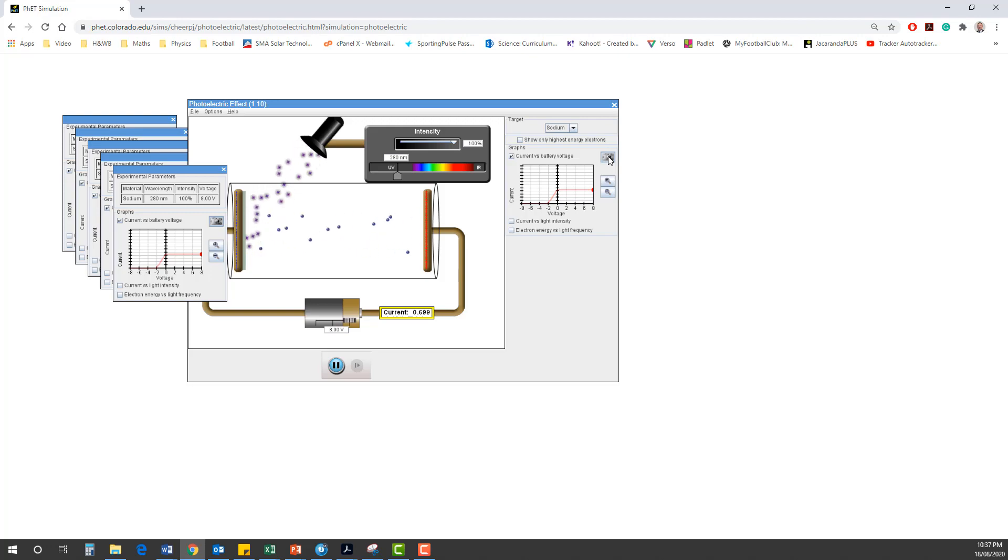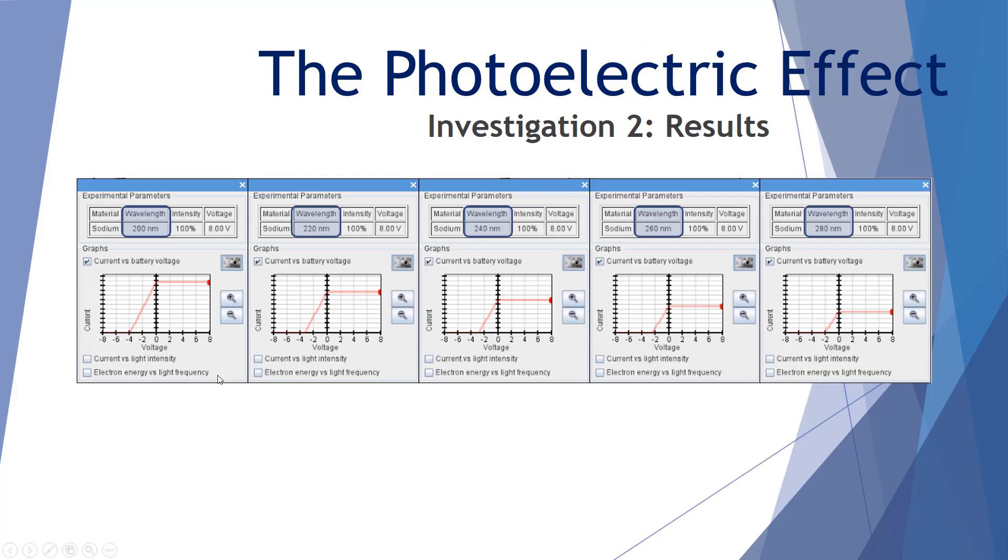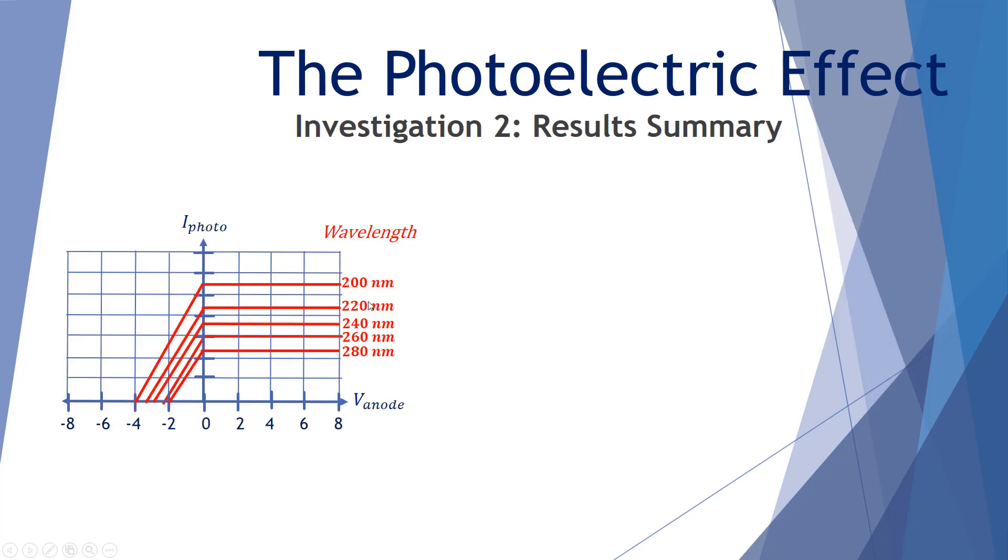Let's now analyze these results. Here's our summary of results. So we can see as we're changing our wavelength from 200 nanometers to 220 to 240 to 260 to 280, there's definite changes happening in each of these five graphs. This is a summary of our results, starting at 200 nanometers and moving down to 280 nanometers. So first of all, it's more appropriate if we're comparing the photocurrent and the voltage of the anode against frequency rather than wavelength.